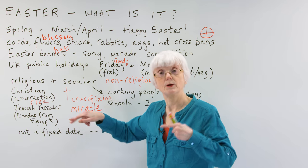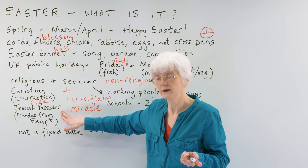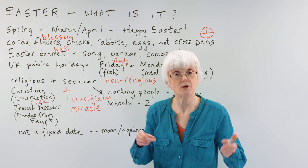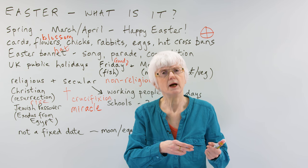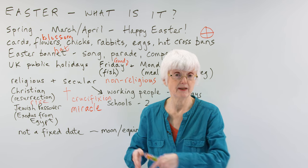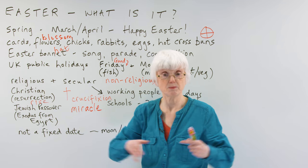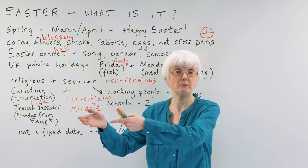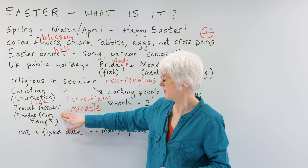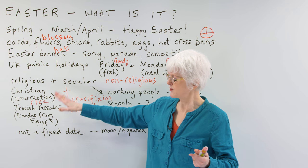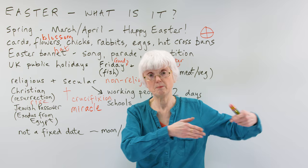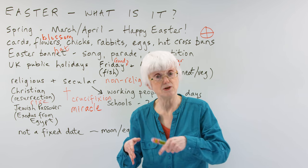Easter is also connected with the Jewish religion — the Passover — which was much, much earlier, with what's called the Exodus of the Jewish people from Egypt. They had been taken to Egypt as slaves and made to work there, but they wanted to get back to their own land. This Exodus — meaning coming out of Egypt, leaving Egypt, going back to their own country — was another kind of miraculous event. It's sort of connected with the same religious festival at the same time of year, and that connection is much older than the crucifixion and resurrection story.